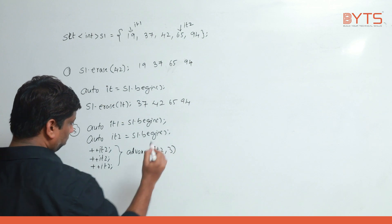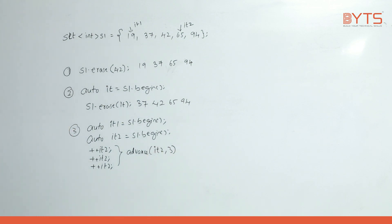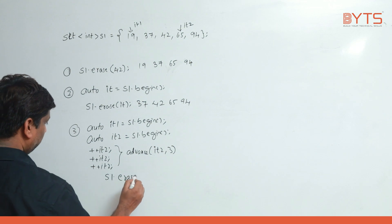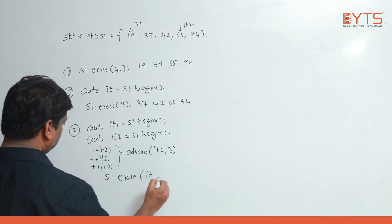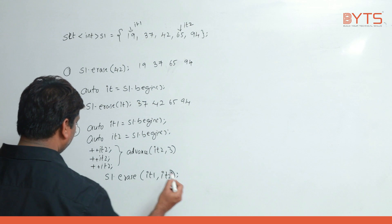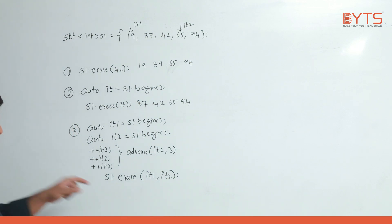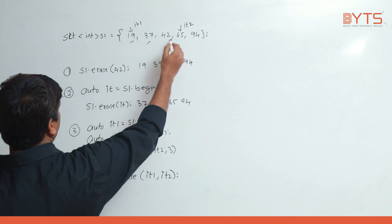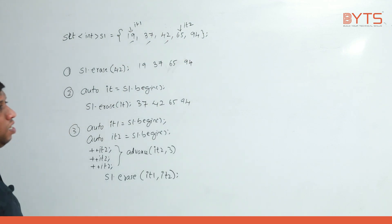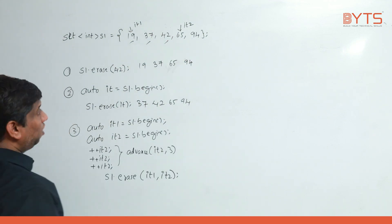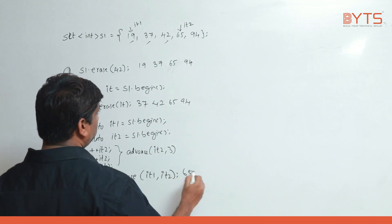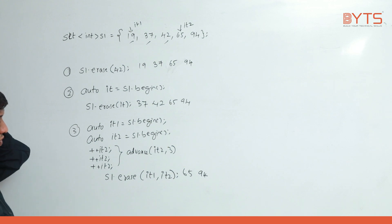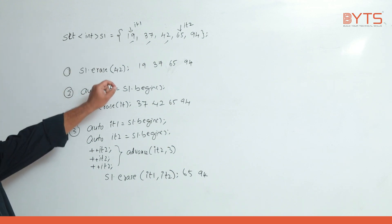Then s1.erase(it1, it2) — elements from it1 to it2 are erased. So 19, 37, and 42 are erased (it2 is exclusive). The elements remaining in the set now are 65 and 94.